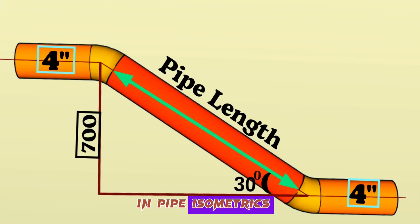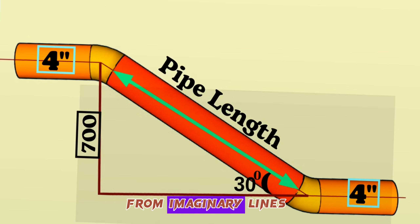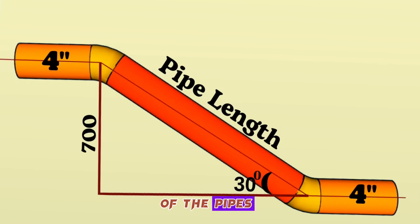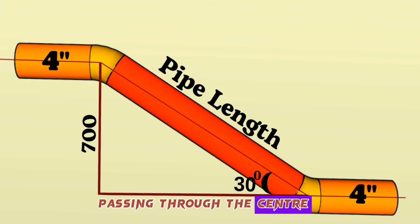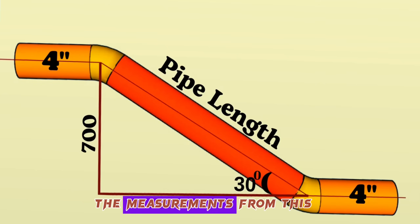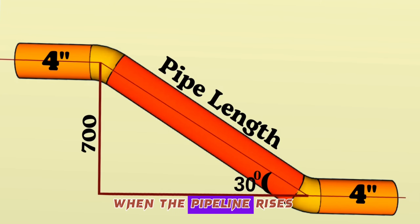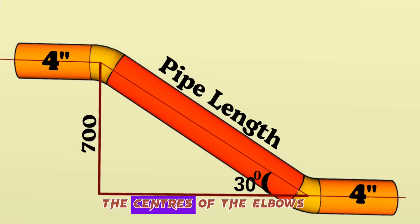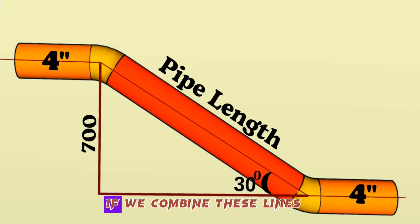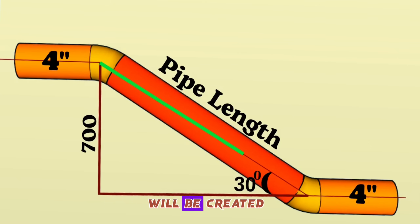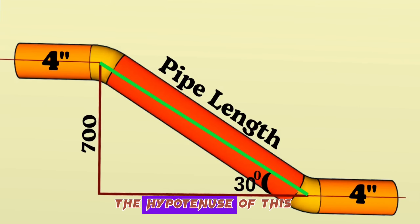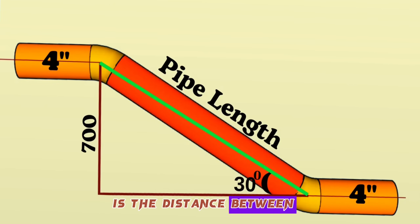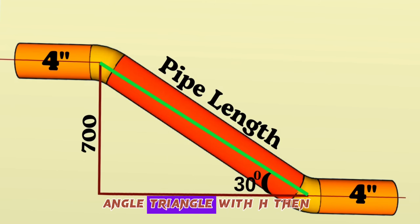In pipe isometrics, length measurements are calculated from imaginary lines passing through the center of the pipes. This thin line you see is the imaginary line passing through the center of our 3D pipeline. When the pipeline rises at a 30-degree angle, it forms perpendicular lines passing through the centers of the elbows. If we combine these lines, a right-angle triangle is created. The hypotenuse of this right-angle triangle is the distance between the elbows in the pipeline.